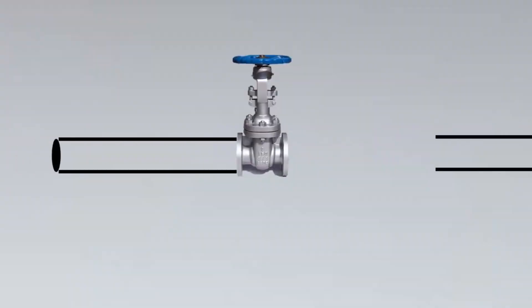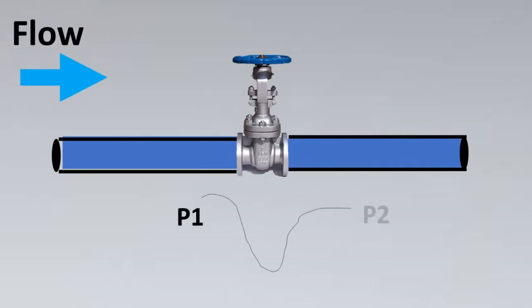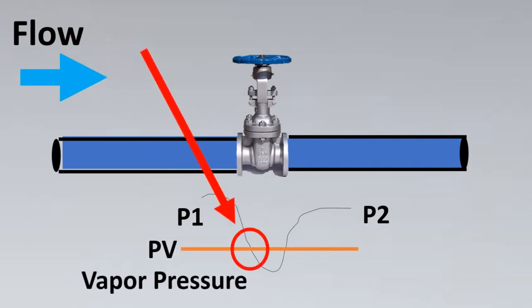What is cavitation and flashing? Imagine this is your valve put in a line. With the flow there is some restriction, so you're going to have a DP or differential pressure created. The upstream pressure is P1 and the downstream pressure is P2. Now imagine this is your vapor pressure curve — when the fluid is in this particular region, it changes from liquid state to vapor state.